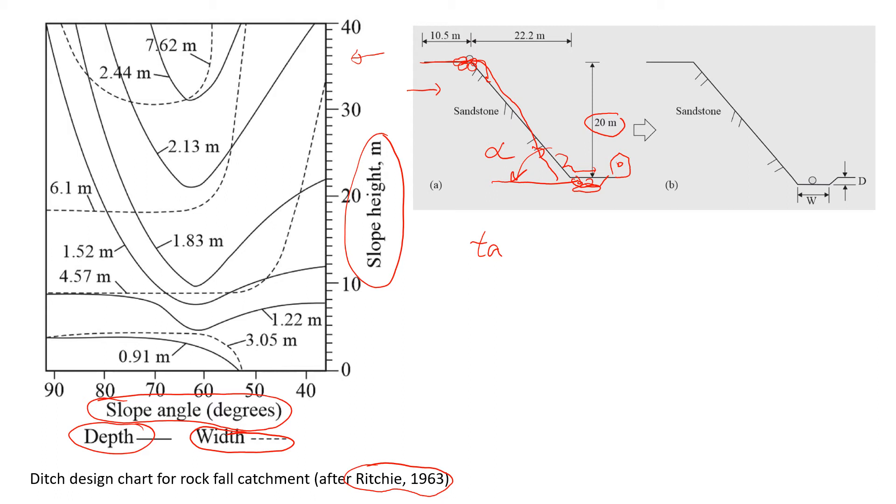Okay, so let's write down the tangent alpha. That will be the height which is 20 meters divided by this part which is given 22.2 meters. So that will be approximately 0.9 and tangent of 0.9 will give us that angle, it's about 42 degrees.